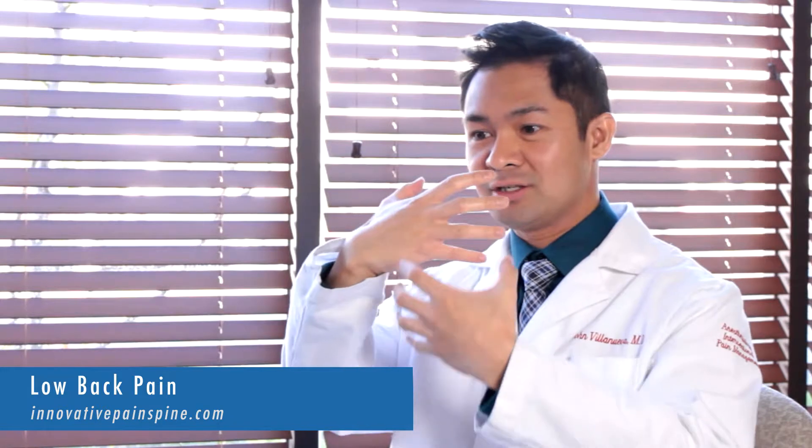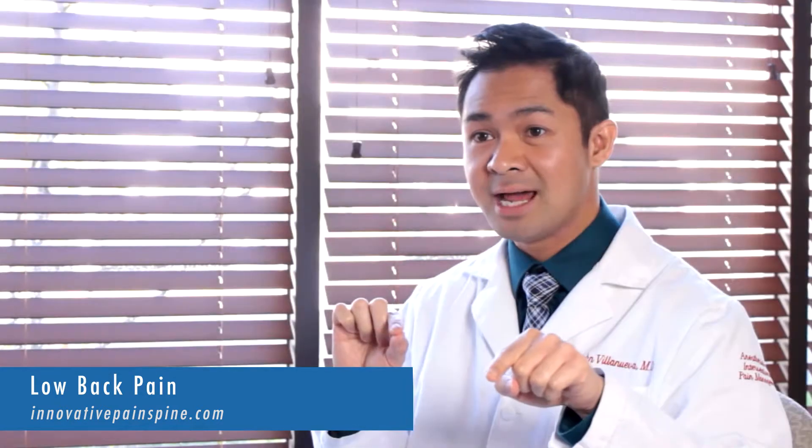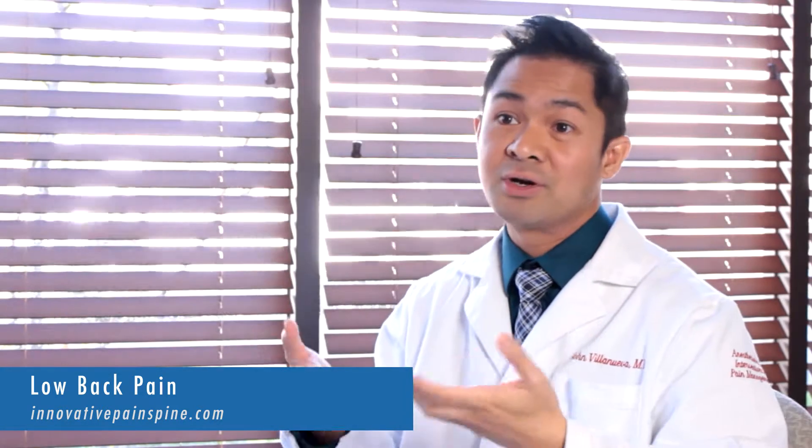The spinal cord is like the tree trunk and the branches are the nerve roots in the spine. Those branches of the nerve roots can be compressed by an inflamed disc or herniated discs.